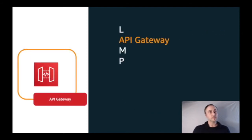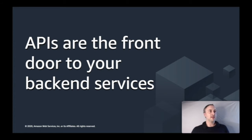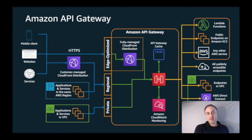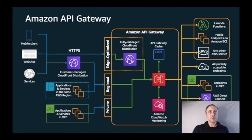API Gateway is often described as the front door to your back-end services. With Amazon API Gateway you have a fully managed service that makes it easy to create, maintain, and secure APIs at virtually any scale. These APIs can access data, business logic, or functionality from back-end services. You can create RESTful APIs, WebSocket APIs for real-time two-way communication, or the newer HTTP APIs — all usable for containerized, serverless, or any form of web application.